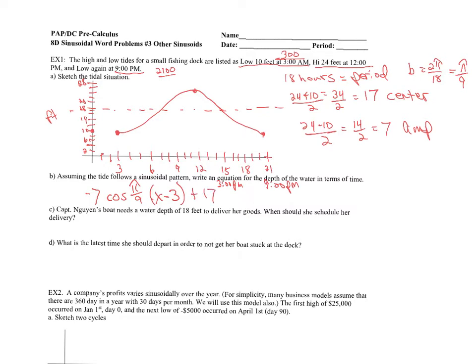So we start at 17, and we go up and down 7 from there.